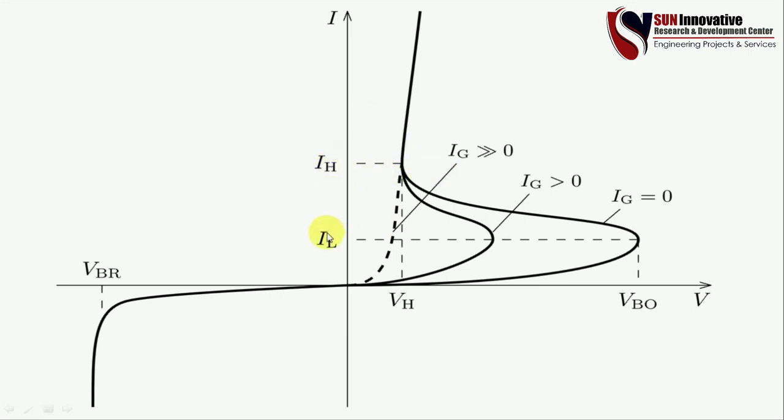There are two states most important in the thyristor: holding current and latching current. These are the basic characteristics of the SCR. They show the minimum current required to turn the thyristor on and the minimum current required to turn it off. When the anode current drops below the holding current, the thyristor turns off.